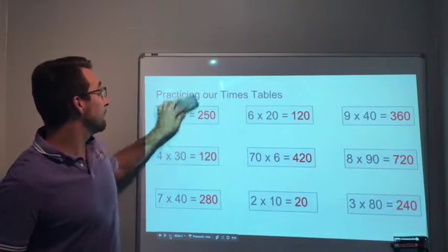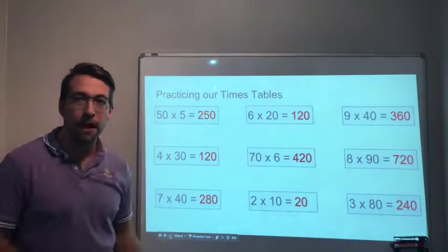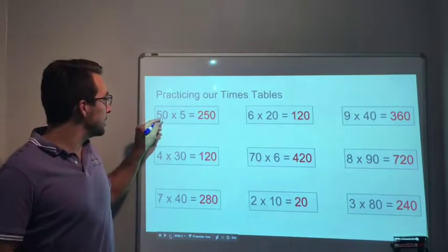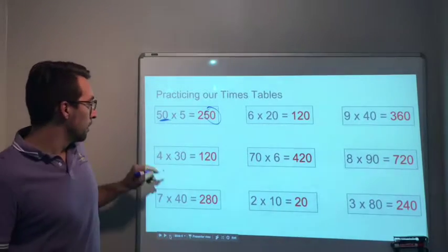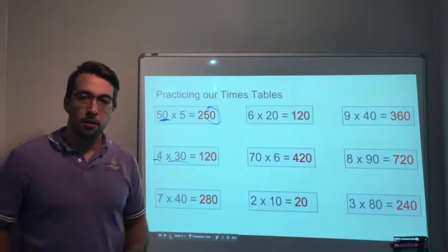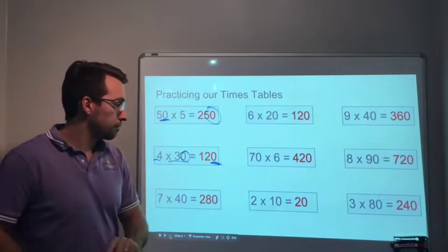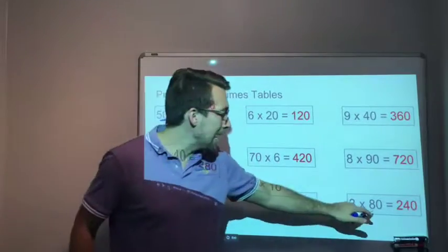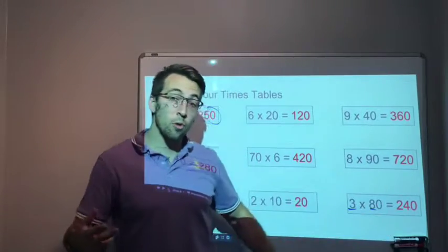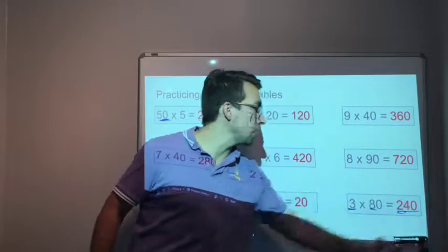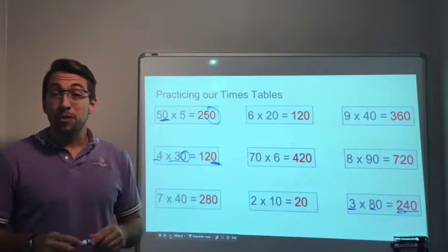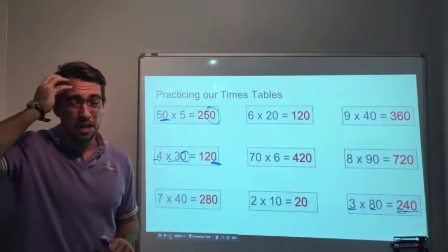5×50? Well, 5×5 is 25, and we have one zero, so 250. 4×30? 12, and we have one zero: 120. 3×80? 3×8 is 24, we have one zero, so 240. Hope this video is helpful. Hopefully you can see and visualize what adding a zero does in multiplication.